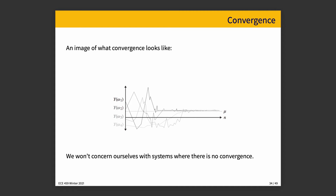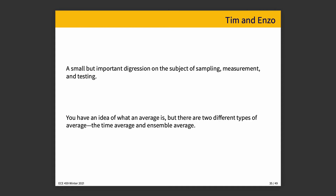We're not going to talk about systems where there is no convergence. Every sample path, or almost every one, will behave well enough if we take enough samples — that is, we get past those initial conditions. We're going to have to interrogate that a little bit, and so we have to talk about sampling, measurement, and testing. You probably have an idea of what an average is, but what I'm actually interested in talking about here has two different things: two kinds of average — a time average and an ensemble average.